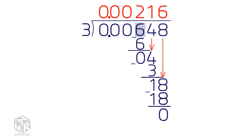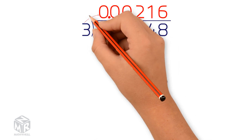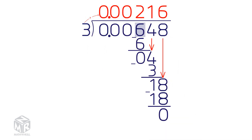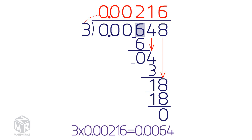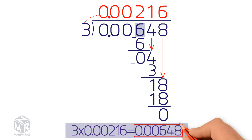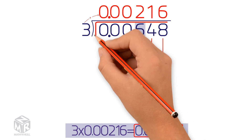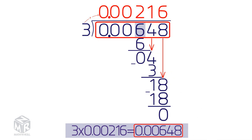So the answer is 216 hundred-thousandths. We can check our work by multiplying the divisor times the quotient. We get 648 hundred-thousandths, which is the same as our dividend. So our answer is correct.